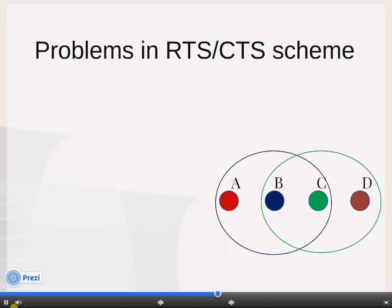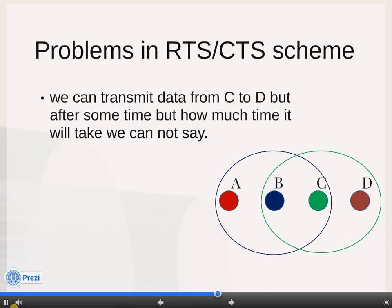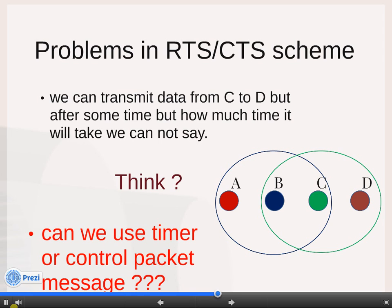In the RTS/CTS mechanism, data is transmitted from node C to D, but C and B both cannot send simultaneously. And we don't know how much time node B and A will take. So think how to resolve this problem. Can we use some timer or any control message or control frame?